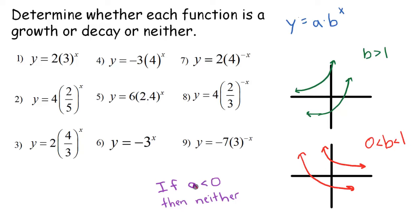Now, if our a value is, which is the number in front of the b to the x power, if our a value is negative below 0, then it's not going to be a growth or decay, and that will look like this, or it could actually look like that. Generally, these are just rough sketches, of course.